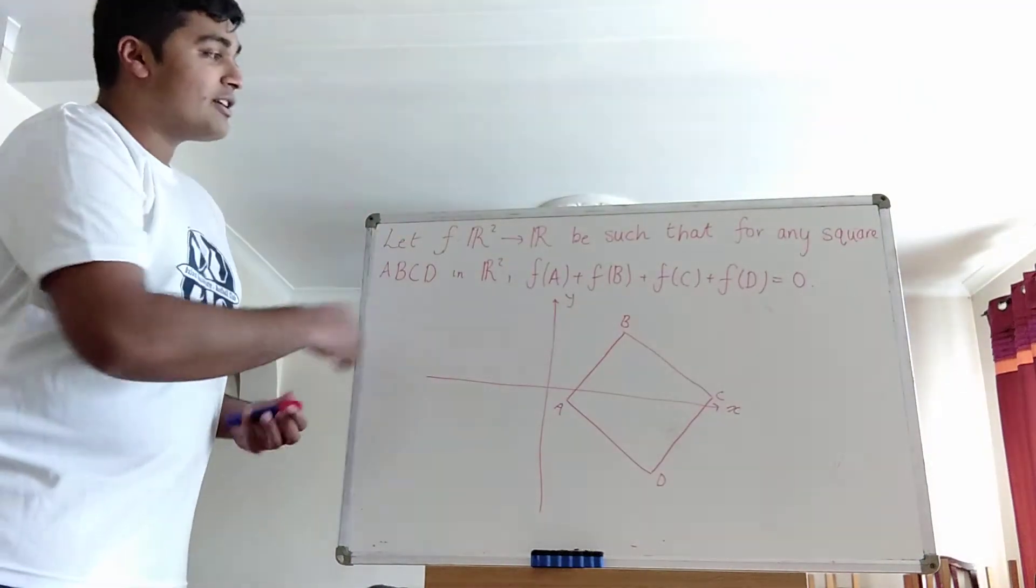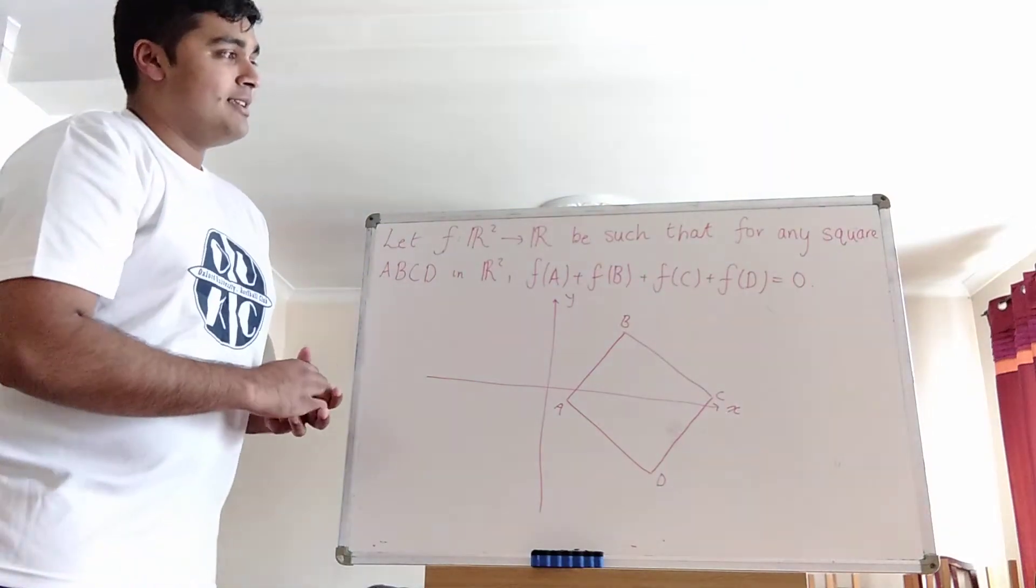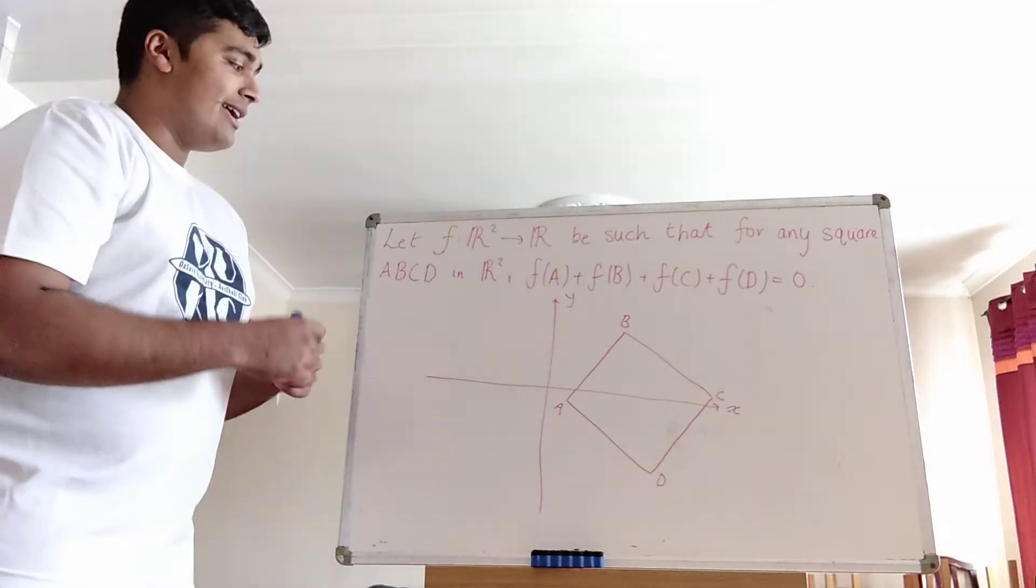It's a very stereotypical Oxford or Cambridge interview-style question for maths or similar subjects. Okay, so here's the problem. We have a function defined on the xy-plane, such that whenever we take a square.